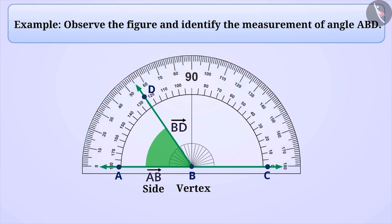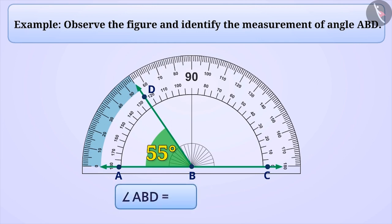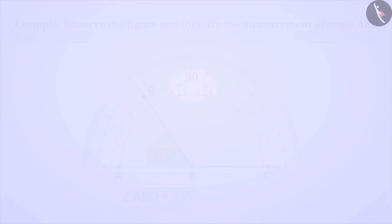Now we see that the other side of the angle is representing 5 parts ahead of 50 on the outward scale, which means it is representing 55 degrees. Therefore, we write the measurement of the angle as 55 degrees. In this way, we can say that angle ABD is equal to 55 degrees.